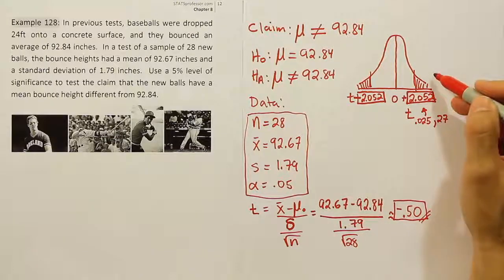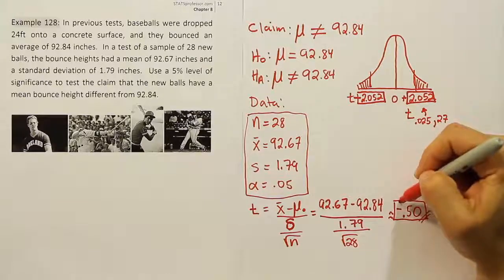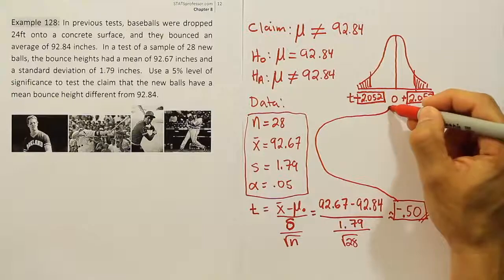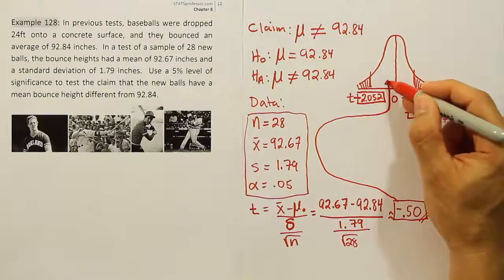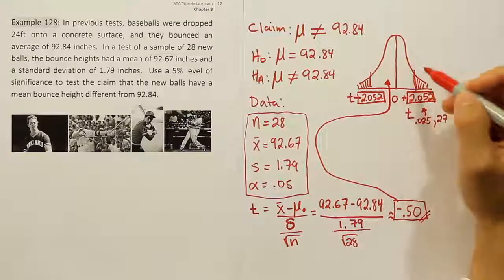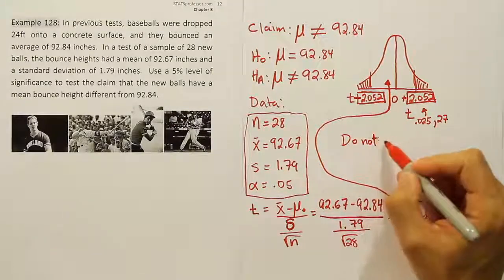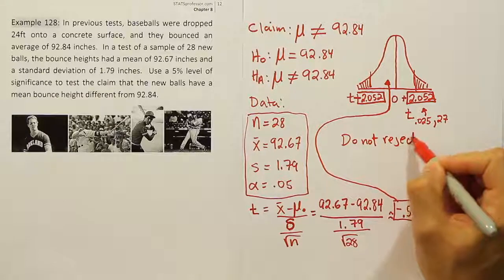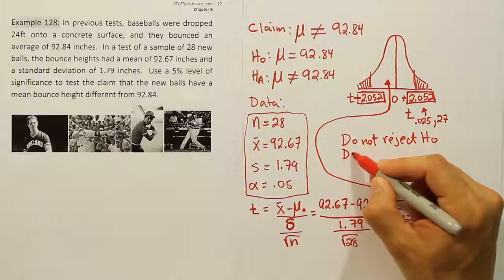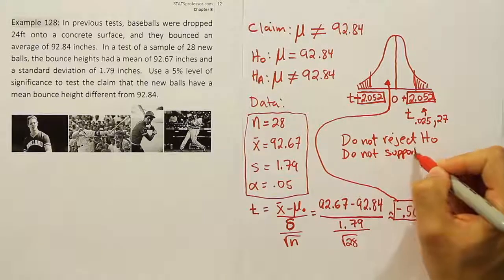Remember, if we land over here, we'll reject the null hypothesis. If we land in here, we do not reject. So looking at where this test stat lands, we can see that it actually lands somewhere over here in the white space. So we're going to say do not reject the null hypothesis. If you do not reject H₀, you do not support H_A.